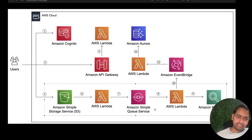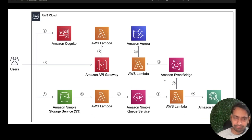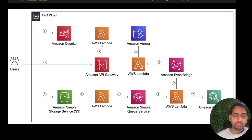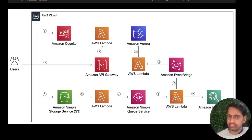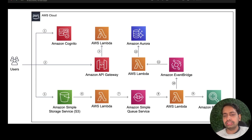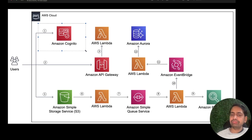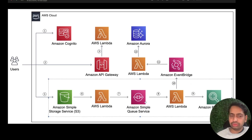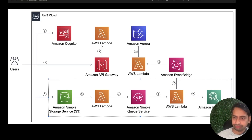Our goal is to create constructs, create stacks out of them, and use CDK CLI to deploy or destroy resources. Using CDK you can create any AWS component — Cognito, Lambda, Aurora DB, EventBridge, SNS, SQS, API Gateway, DynamoDB — just by writing TypeScript code. In the coming demos we will see how to do all these things through TypeScript code and explore the core constructs of AWS CDK.